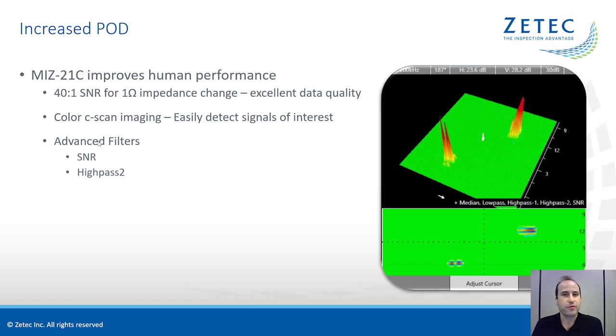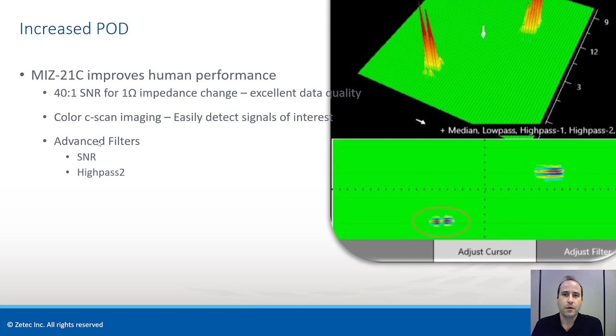In this example, there are two notches in close proximity with each other. You can clearly see two distinct indications. On a traditional impedance display, this may come up as one combined signal.